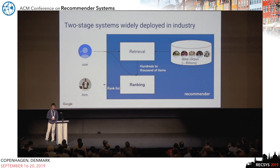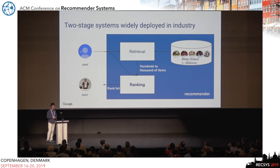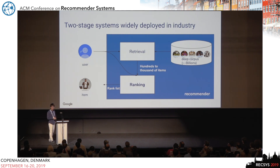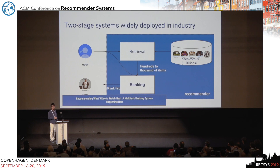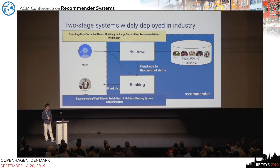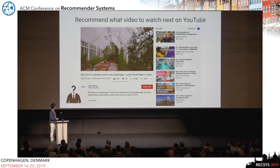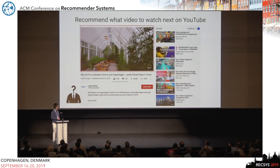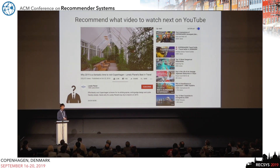Many modern industrial recommendation systems use a two-stage framework containing retrieval and ranking. Retrieval filters billions of items into a few thousand candidates, while ranking accurately generates a ranked list from those candidates. This talk focuses on the ranking part — we have a separate paper on the retrieval part being presented Wednesday. The case study is YouTube Watch Next recommendation: given the video a user is currently watching and some complex features, we want to provide rankings of videos the user is most likely to watch next.